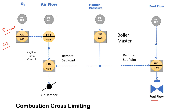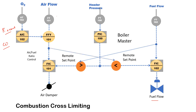To avoid the accumulation of fuel in the boiler or furnace, combustion cross-limiting is applied. A high selector is used, which takes input from both airflow and fuel flow, and whichever is higher gets fed into the air-fuel ratio controller. On the other hand, a low selector takes input from the airflow and fuel flow, and whichever is lower goes into the fuel controller, which regulates the fuel flow.